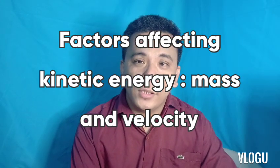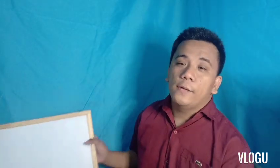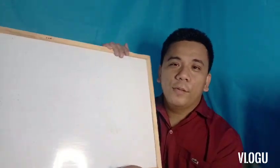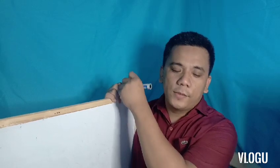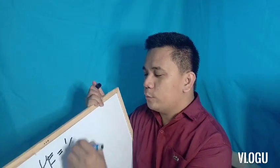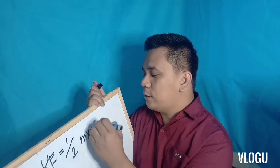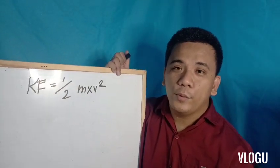The factors involved in calculating kinetic energy are mass and velocity. Let us have the formula for kinetic energy. Kinetic energy is the energy in motion. On the whiteboard, KE stands for kinetic energy and is equal to one-half of mass multiplied by velocity squared. This is our formula. Let us try to compute a sample problem.